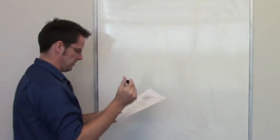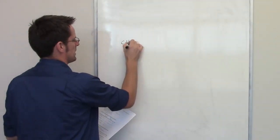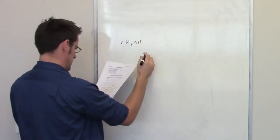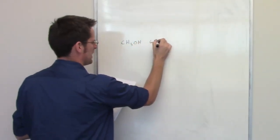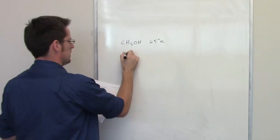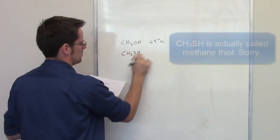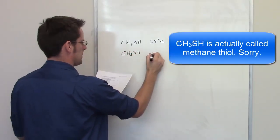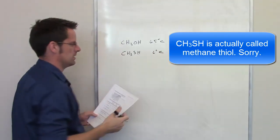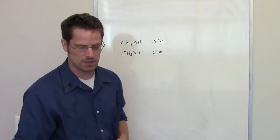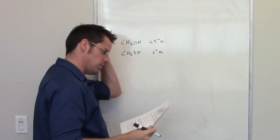Here we're asked to explain the following observation. Methanol, whose formula is given right here, has a boiling point of 65 degrees centigrade, while methyl sulfide, whose formula is given here, has a boiling point of 6 degrees centigrade. In other words, methanol has a much higher boiling point than methyl sulfide.